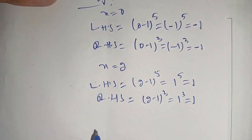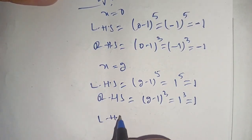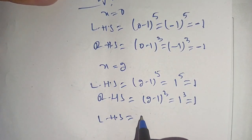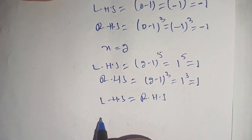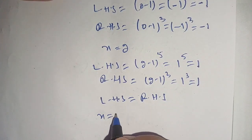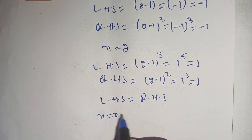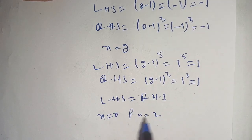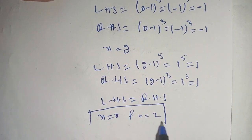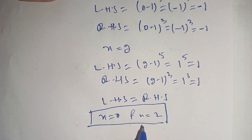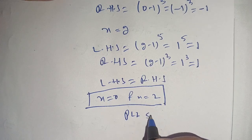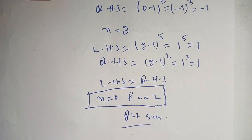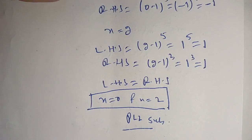In both cases the left hand side is equal to the right hand side, which means x equals 0 and x equals 2 both satisfy our given equation. These are the solutions of the given equation. If you are new here, make sure to subscribe to our channel for more informative videos. See you in the next video. Till then, bye.